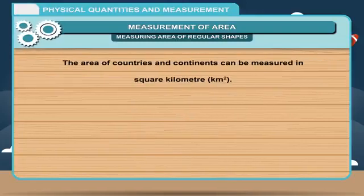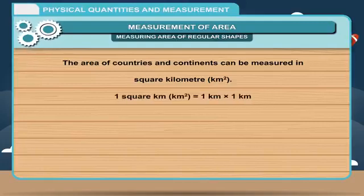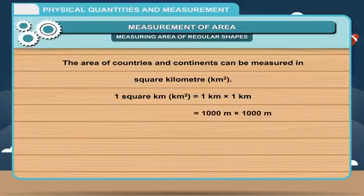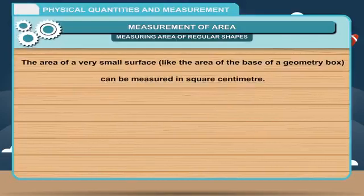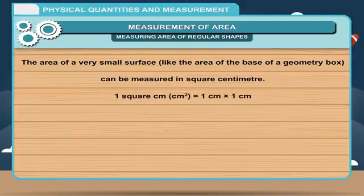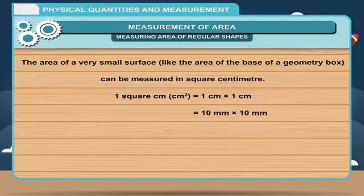The areas of countries and continents can be measured in square kilometers. 1 square kilometer is equal to 1 km × 1 km, which equals 1000 m × 1000 m, equaling 1,000,000 m². The area of a very small surface, like the base of a geometry box, can be measured in square centimeters. 1 square centimeter equals 1 cm × 1 cm, which equals 10 mm × 10 mm, equaling 100 mm².